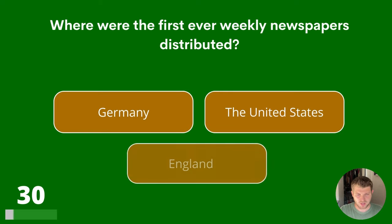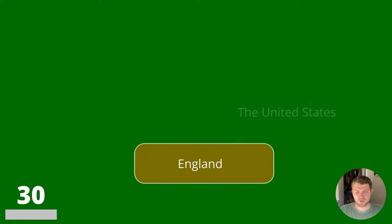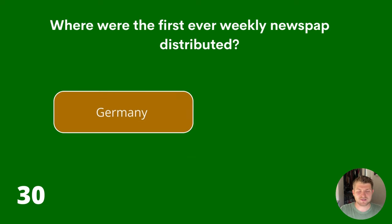Question 30. Where were the first ever weekly newspapers distributed? Germany, The United States or England? The answer is Germany.